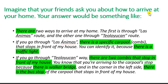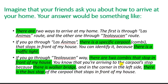Entonces, imagínate que tus amigos te preguntan cómo llegar a tu casa y tus respuestas probablemente sean: 'Hay dos maneras de llegar a mi casa — la primera es por Las Ánimas y la segunda por Toloiyucan.' Si te vas por Las Ánimas, hay una combi en específico que se detiene en frente de mi casa; puedes identificarla porque hay un semáforo. Si te vas por Toloiyucan, hay dos combis que se detienen en frente de mi casa. Sabrás que llegaste a la parada porque hay un puente peatonal y en la esquina está la parada de las combis.